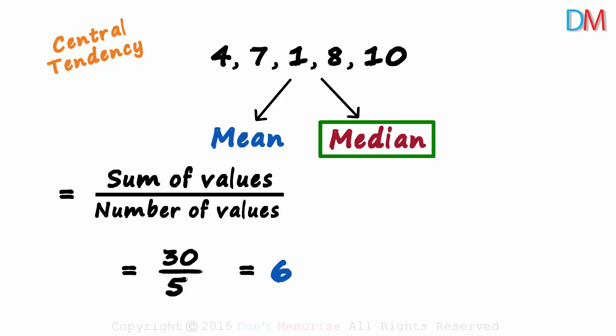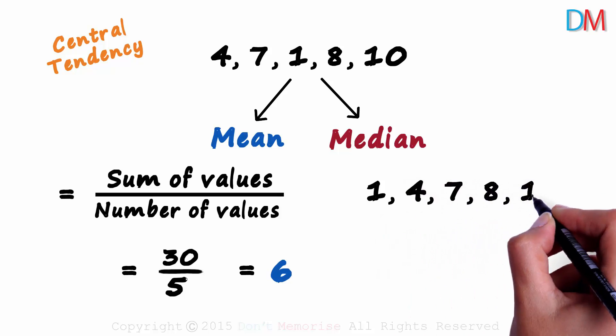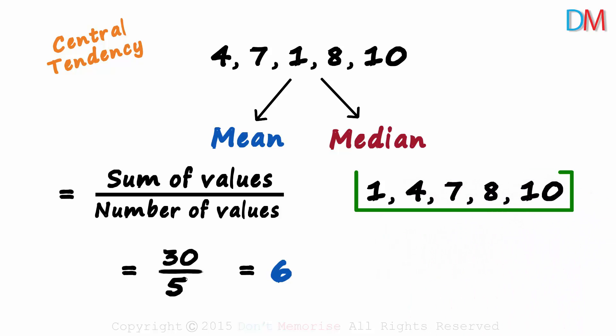To find the median, we arrange the terms in ascending order. We write them as 1, 4, 7, 8 and 10. After arranging it in the ascending order, the median is simply the value that lies exactly in the middle. It's 7. It has two values on its left and two on its right. 7 is the median of this set of numbers.